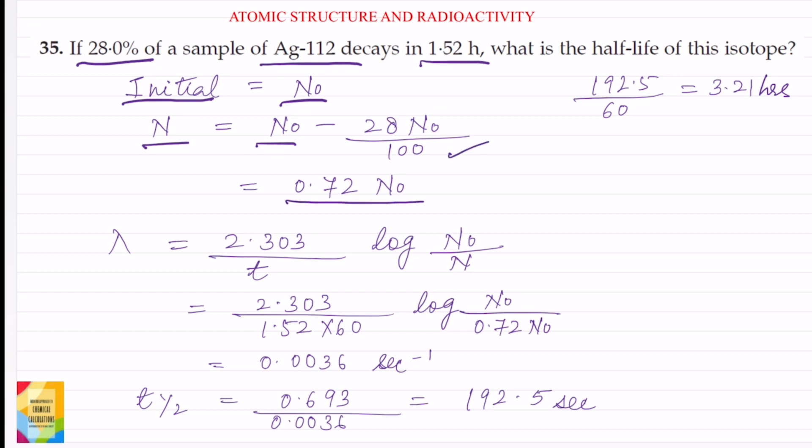The value of N will be 0.72 into N0. Now the formula for the decay constant is equal to 2.303 divided by time log initial concentration divided by final concentration.